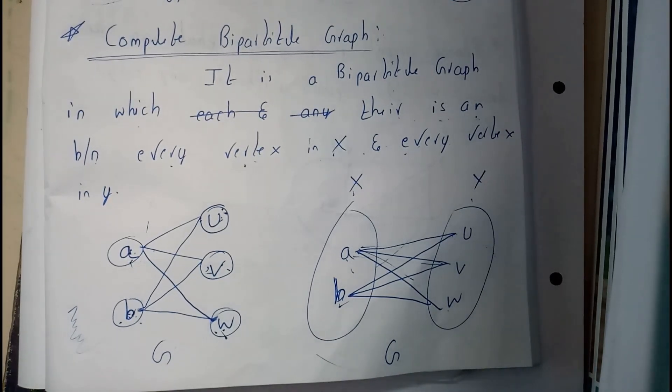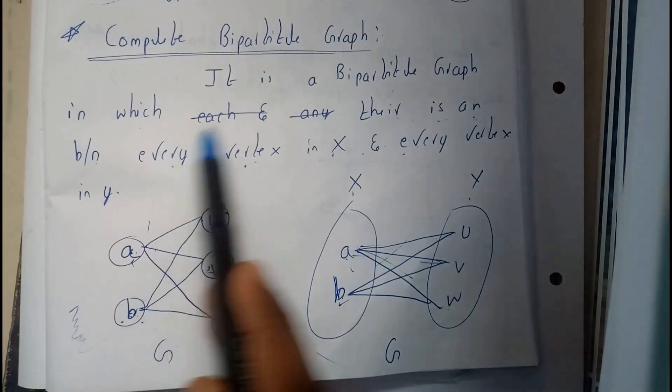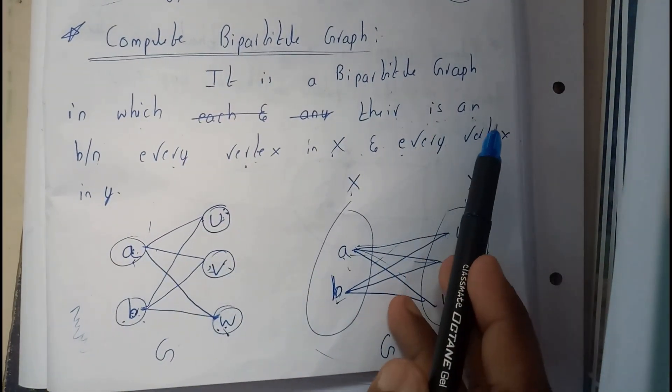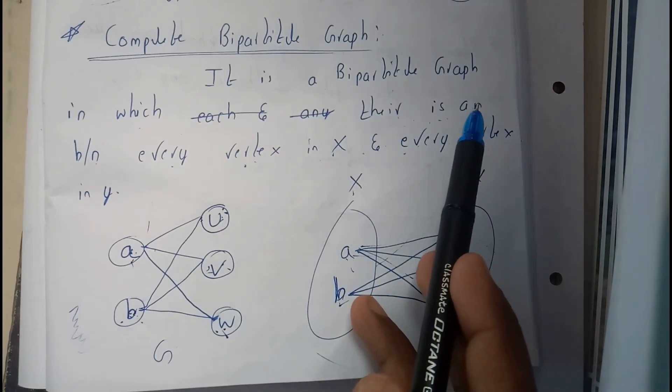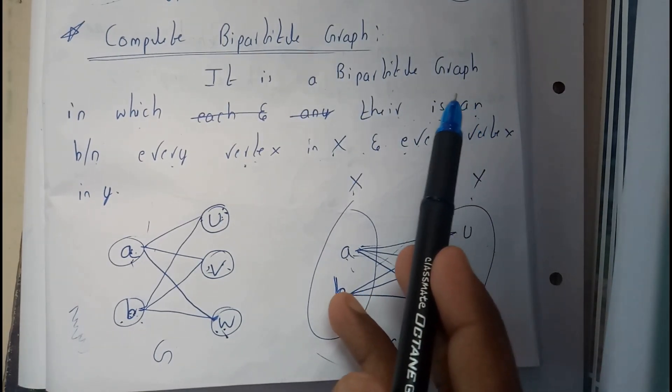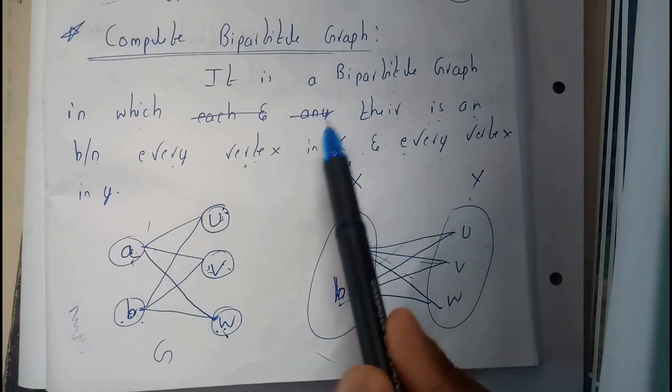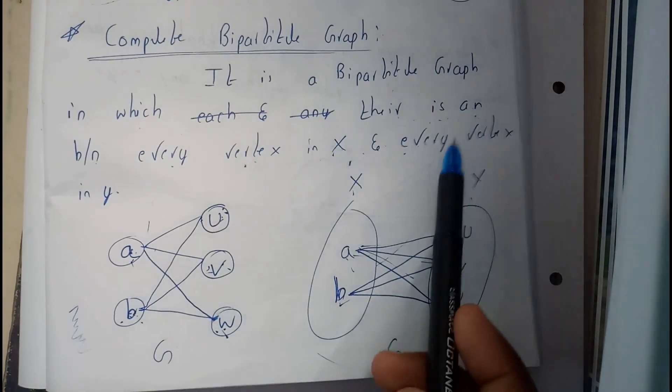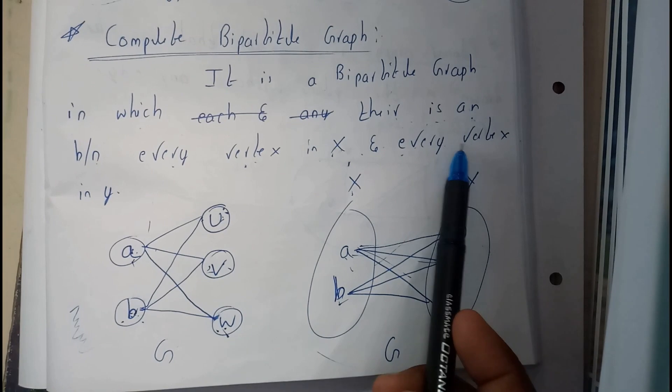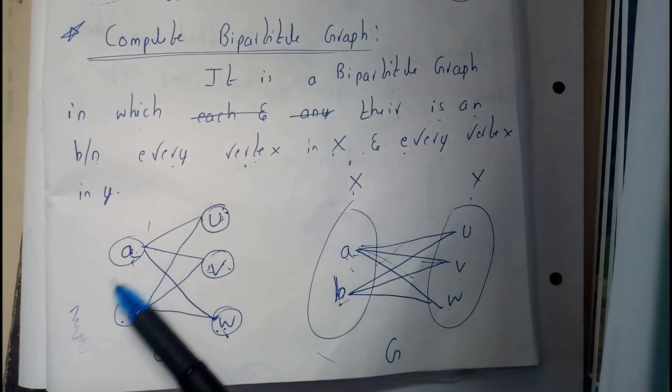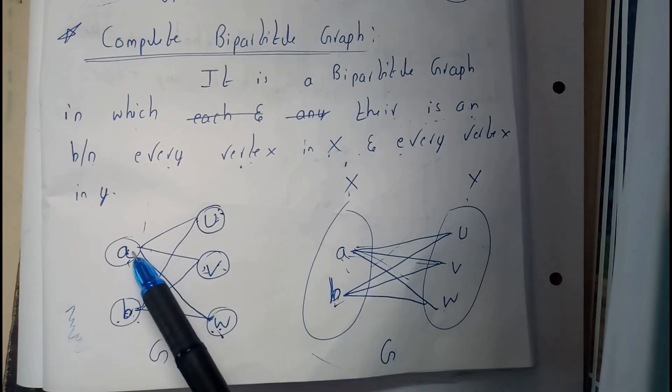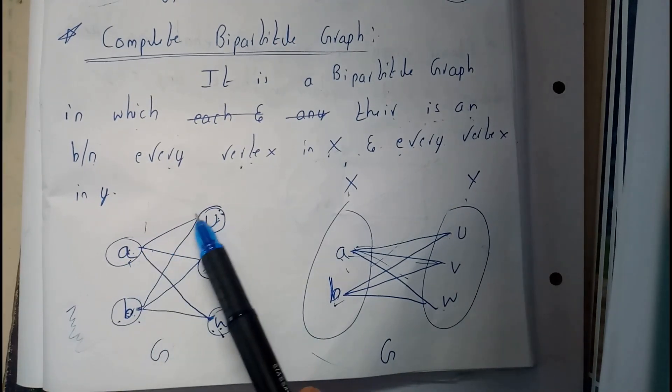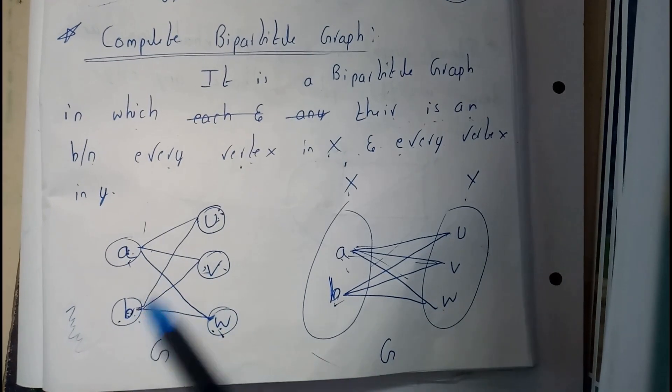Basically it is a bipartite graph in which there is an edge between each and every vertex such that from a vertex from set X and the vertex to set Y. Let us assume a and b belongs to set X, u v w belongs to set Y, such that each of the combination is possible.